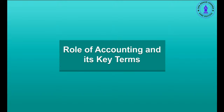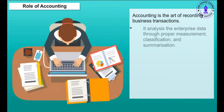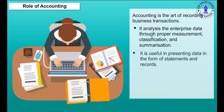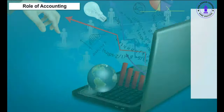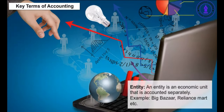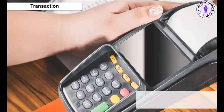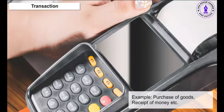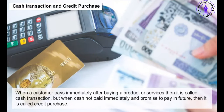Role of accounting: accounting is the art of recording business transactions. It analyses enterprise data through proper measurement, classification and summarization, and is useful in presenting data in the form of statements and records. Key terms: Entity — an economic unit that is accounted separately, e.g., Big Bazaar, Reliance Fresh. Transaction — a business activity in terms of cash or credit, e.g., purchase of goods, receipt of money. Cash transaction: when a customer pays immediately after buying a product or service.